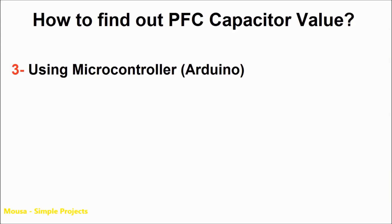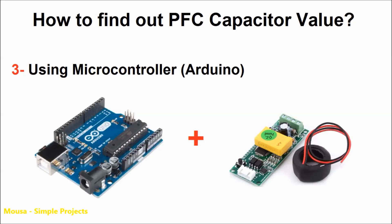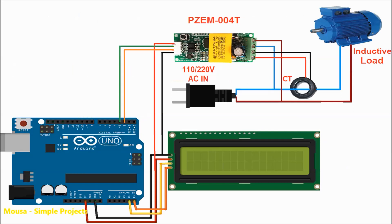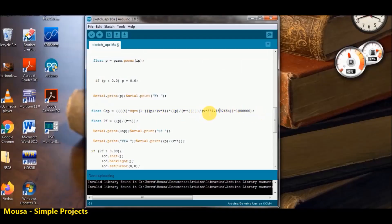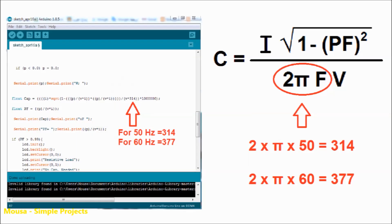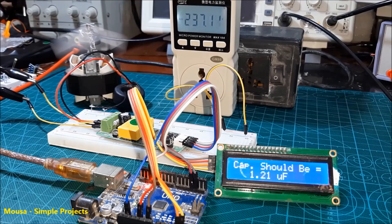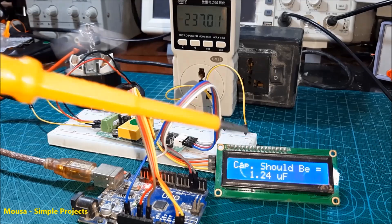The next method to find out the capacitor value is by using a microcontroller and this power meter module, which is designed for measuring current, voltage, and power. I put my formula into the code. Instead of writing 2 times pi times frequency, I just put 314 — that is for a 50 Hz system. If the frequency of your mains voltage is 60 Hz, you have to replace it with 377. My Arduino can calculate the capacitor value for power factor correction for this small motor, and the result is the same as I calculated before.